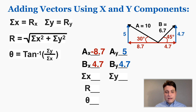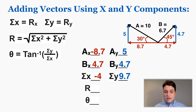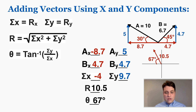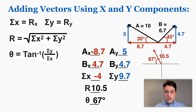The next step is to find the sum of the x components and the sum of the y components. Adding those values gives negative 4 for x and 9.7 for y. Plugging into the square root formula, the total resultant magnitude is 10.5. The angle is 67 degrees. Since the x component is negative and the y component is positive, the resultant is in the second quadrant — so it's a vector of magnitude 10.5 at 67 degrees in the second quadrant.